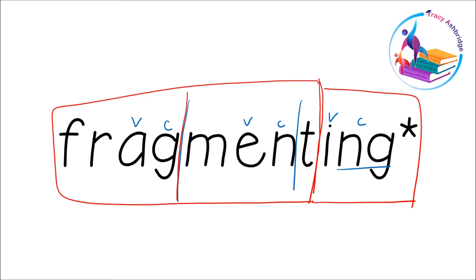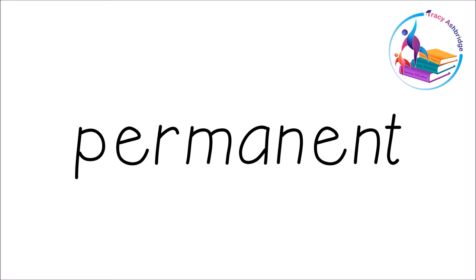Let's have a look at this word. Vowel, consonant, chop. Now, the ER here is making the sound 'er', but we still go with what the letters are: E is a vowel letter, R is a consonant letter, even though together they make a vowel sound of 'er'. Per — vowel, consonant, chop. Vowel, consonant — don't chop off the T because he can't be on his own. So I've got 'per', M-A-N — 'man', E-N-T — 'ent'. 'Permanent'.